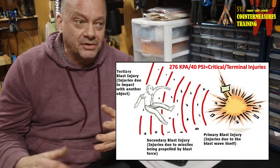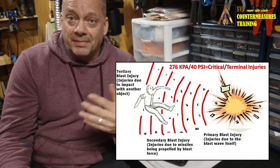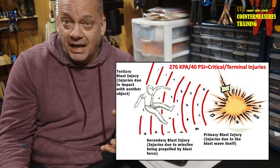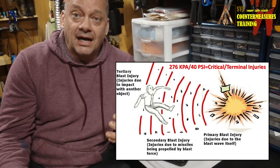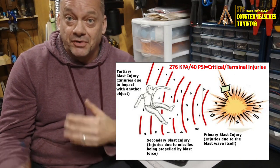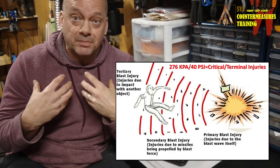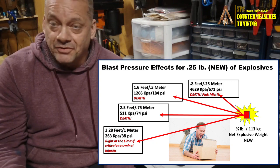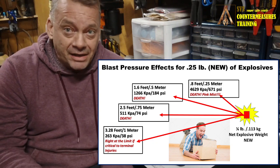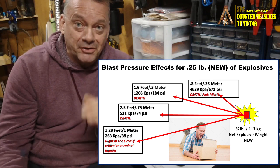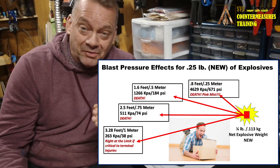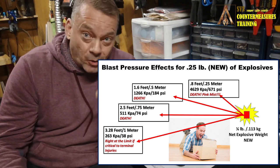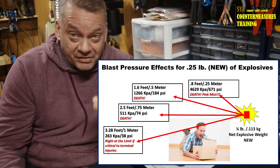Looking at it from a mail screening perspective, the amount of explosives that can cause damage can be very small. The literature shows that anything over about 276 kPa or 40 psi is going to cause critical to terminal injuries to an individual. That's blast pressure — pounds per square inch — and that's not even taking fragmentation into consideration. When a vendor says they can detect a half pound or two pounds, a half pound is a lot of explosives. As a bomb technician, I'm telling you right now a half pound is a lot — a quarter pound is a lot.